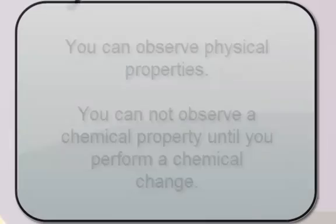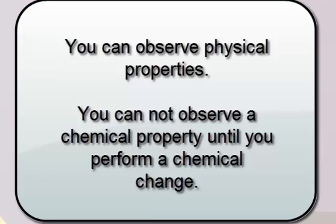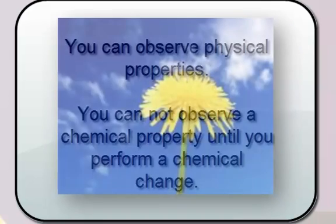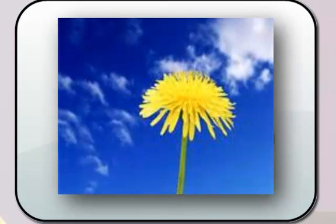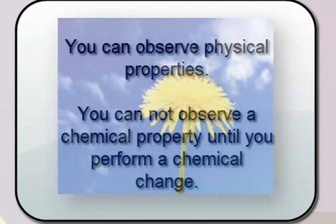How can you tell a physical property from a chemical one? You could basically observe physical properties without changing the identity. A flower is, you know it's a flower because it's soft, the petals are soft, it might have a scent to it. Those are all physical properties. Even if you pulled off some of the leaves or petals, you're not really changing the identity of the flower.